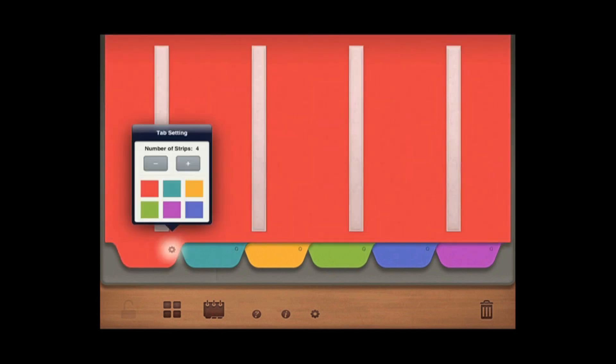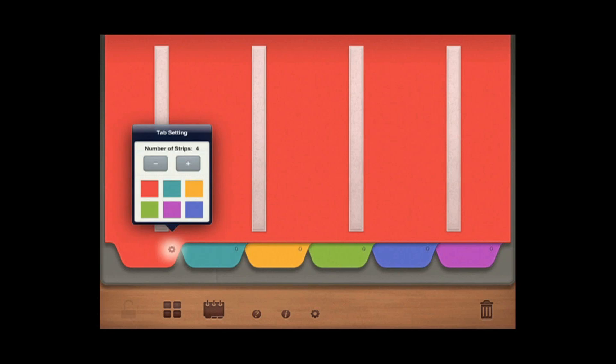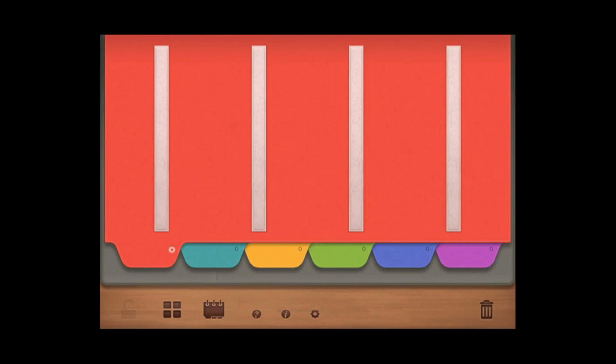To modify the settings on each page, select the setting icon and you can change the number of Velcro brand strips from 0 to 7 and the color of each page. The number of pictures per page depends on the size pictures you are using.